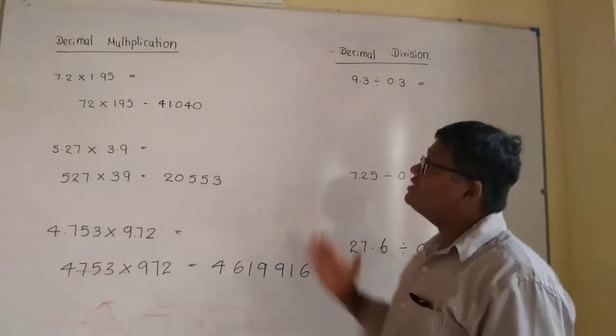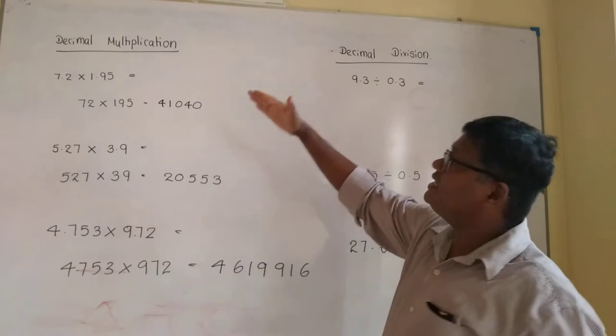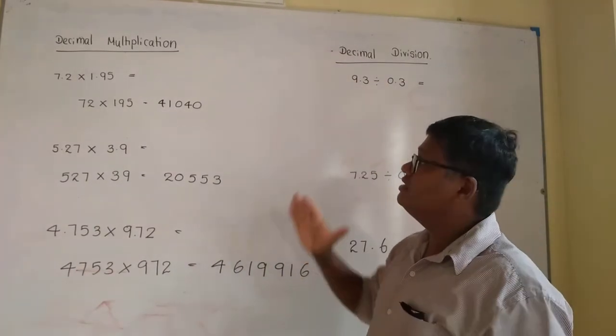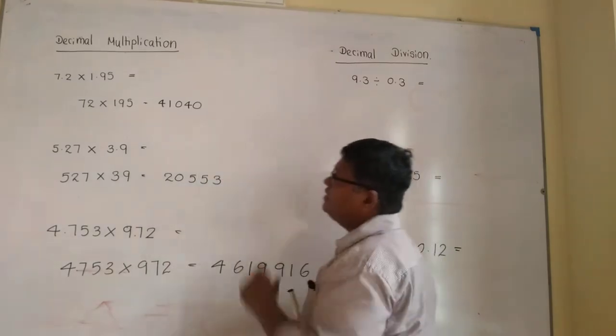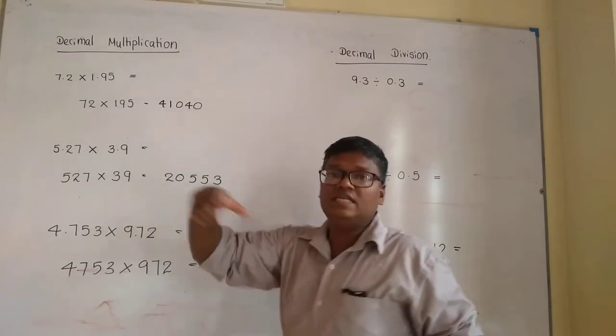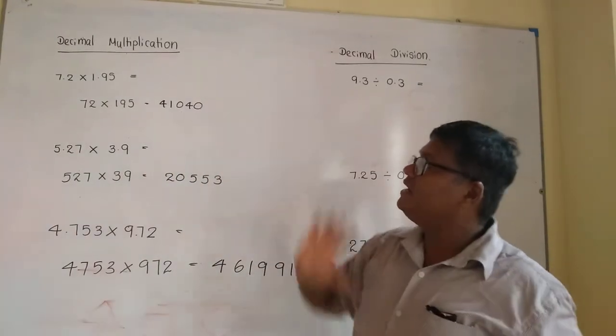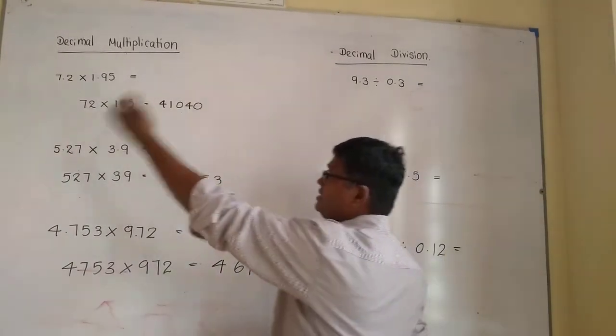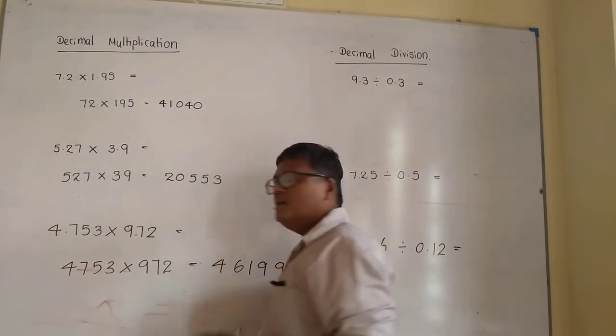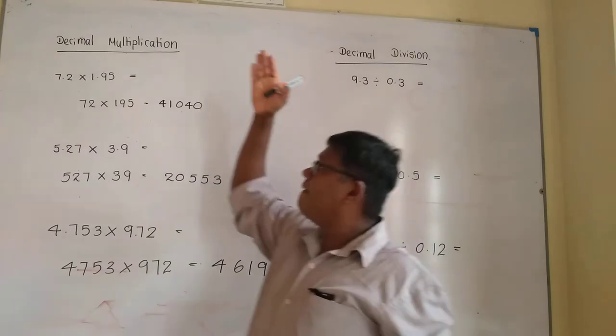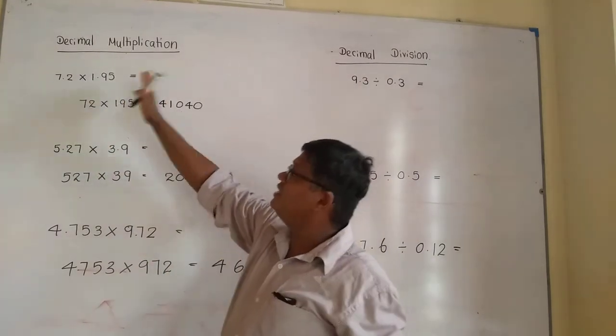Today, I am going to discuss decimal multiplication and division related to grade 8. In grade 6 and 7, we studied multiplying decimals by ten, hundred, thousand, and multiplying a decimal number by a whole number. But here, we are going to study how to multiply a decimal number by another decimal number.